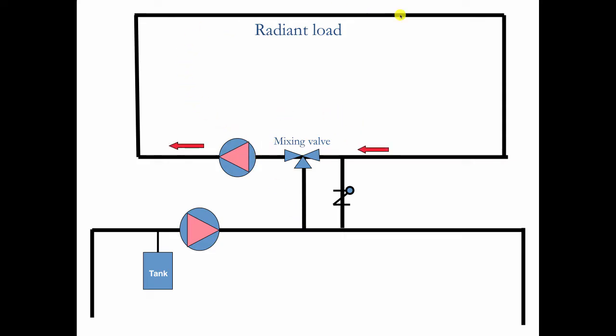So the radiant load is going around here with continuous circulation, moving around and around. We're going to vary the temperature with this mixing valve. There's the primary load, so this is 180 degree boiler water going around here.